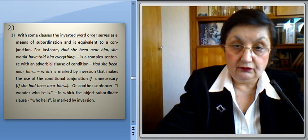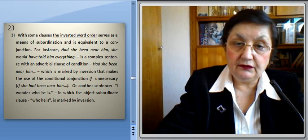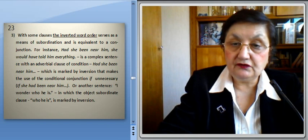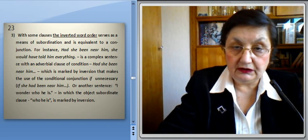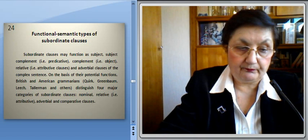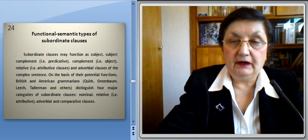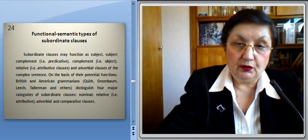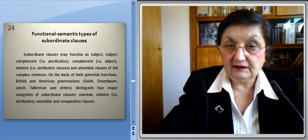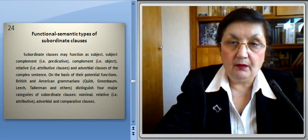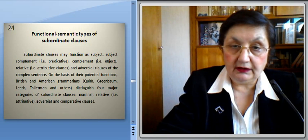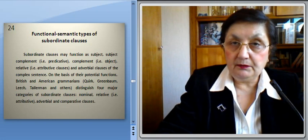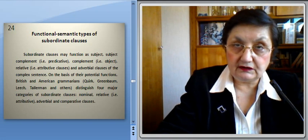Now we'll discuss functional semantic types of subordinate clauses. Subordinate clauses may function as subject, subject complement (that's predicative), complement (that's object), and relative attributive and adverbial clauses of a complex sentence. On the basis of their potential functions, British and American grammarians — for instance Quirk, Greenbaum, Leech, Tallerman, and others — distinguish four major categories of subordinate clauses: nominal, relative, adverbial, and comparative clauses.